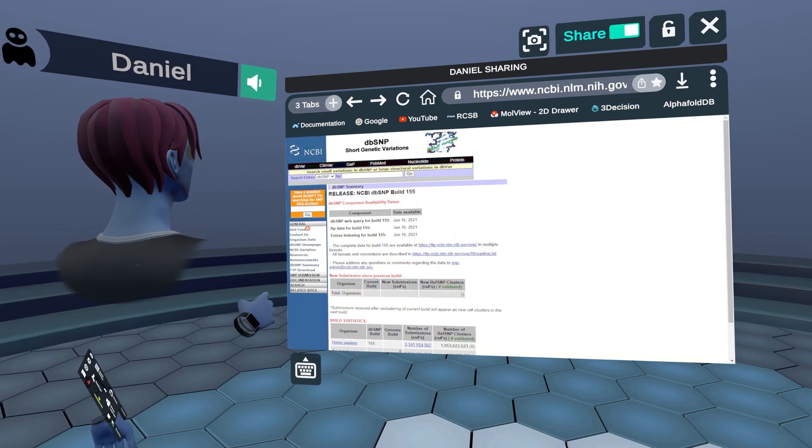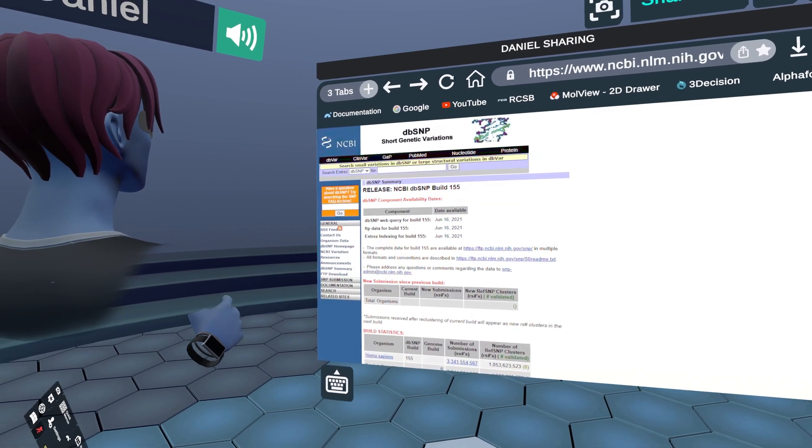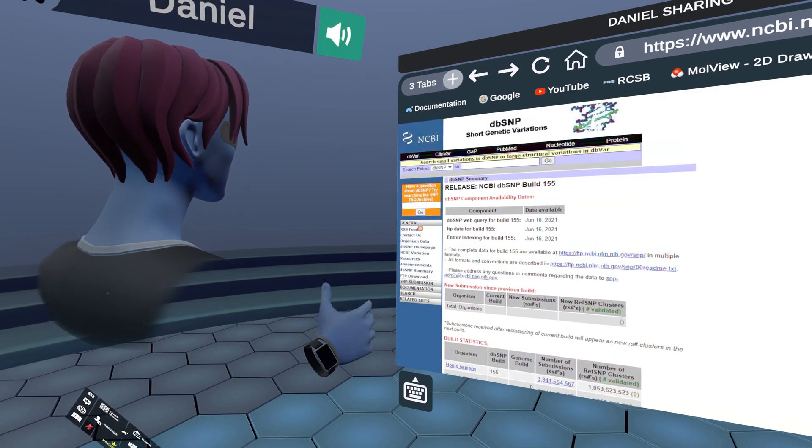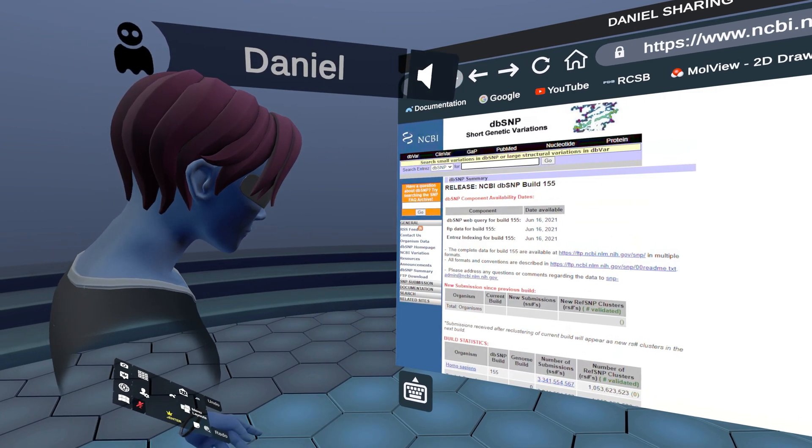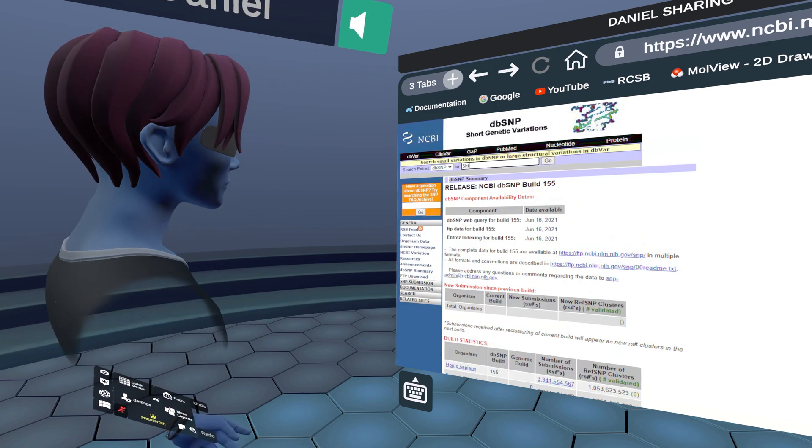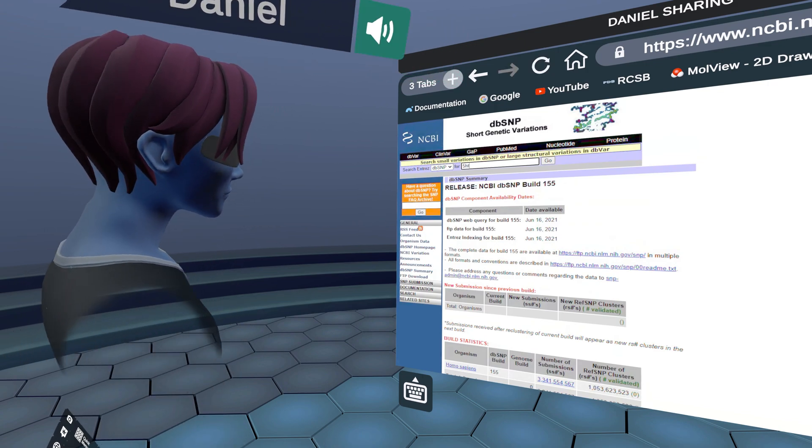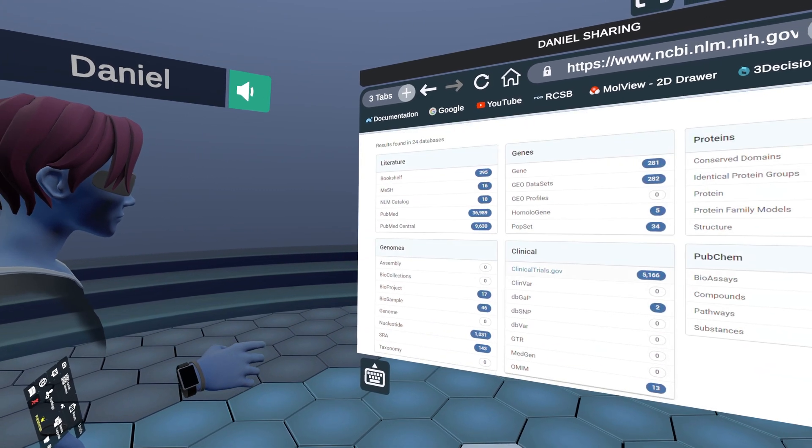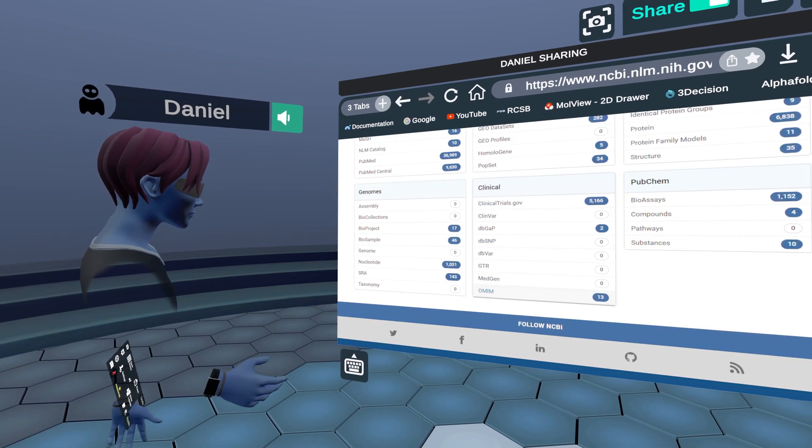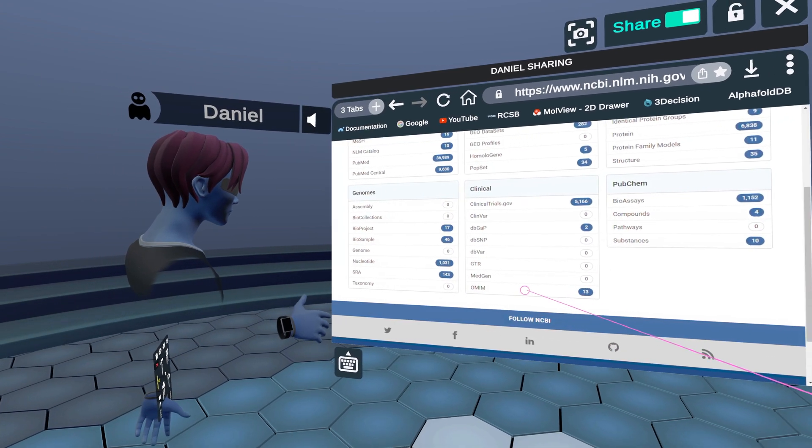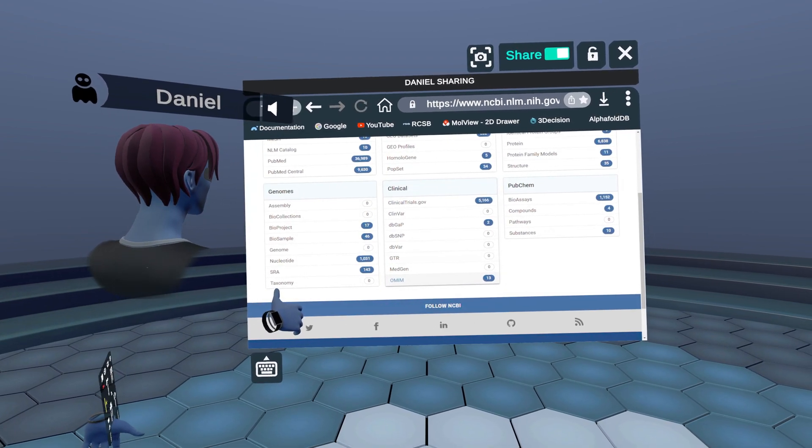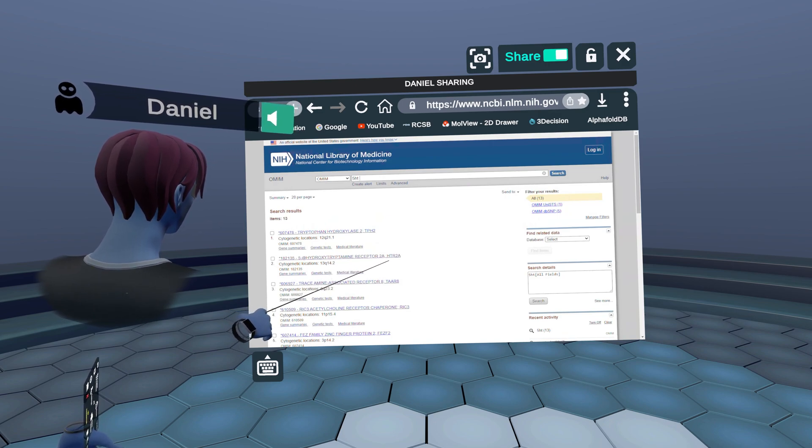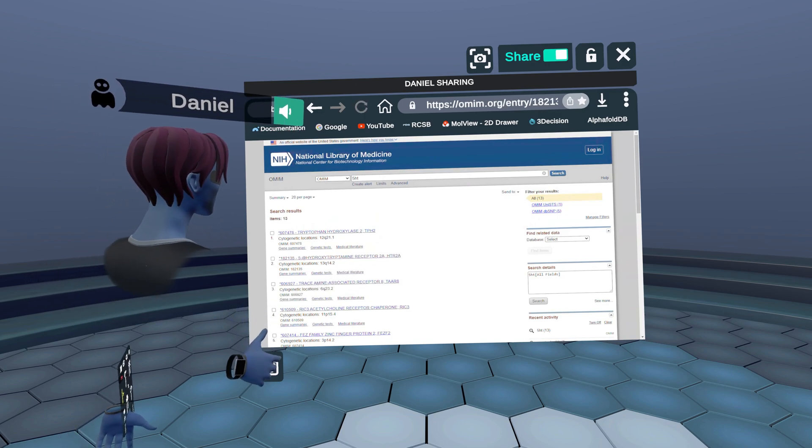And so here we have the database from the NCBI, which is a National Center for Biotechnology Information. And here you can go ahead and type 5-HT for the serotonin receptor. And let's see what hits we get. So we get a lot of things, but the one we're interested in here right now is the OMIM, which is the online Mendelian database for humans. And so we have 13 results apparently.